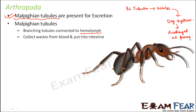So in arthropods, there is no separate mode of excreting waste. Instead, tube-like structures take the waste materials from the blood and put them into the digestive system. Once the waste materials enter the digestive system, they get excreted out in the form of feces. Wastes are discharged through the anus, which is where feces are discharged in the digestive system.